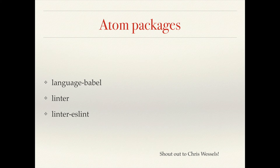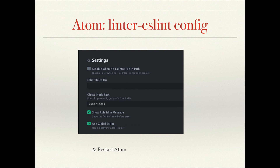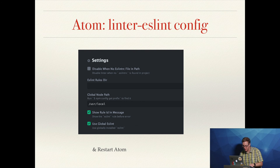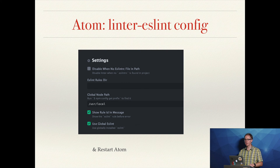There's going to be a follow-on post for that, but if you are using Atom and you want to do it right away, these are the packages you'll need: language-babel, linter, and linter-eslint. And you have to set a couple of configs, which are to use the global eslint. I had to set my global node path in order for it to work, then restart it, and it all works.